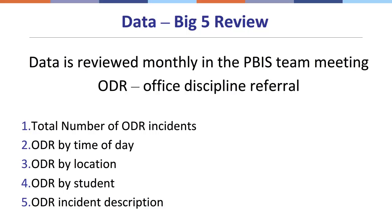The Big Five data are the five different data sources that we want to look at every month to determine how we're doing in terms of discipline on our campus. Those five sources of data include the number of ODR incidents that occur every month. ODR stands for Office Discipline Referral — basically, how many times a student had a discipline action that was entered into Synergy for that month. We also want to look at ODR by time of day, by location, by student, and the incident description.